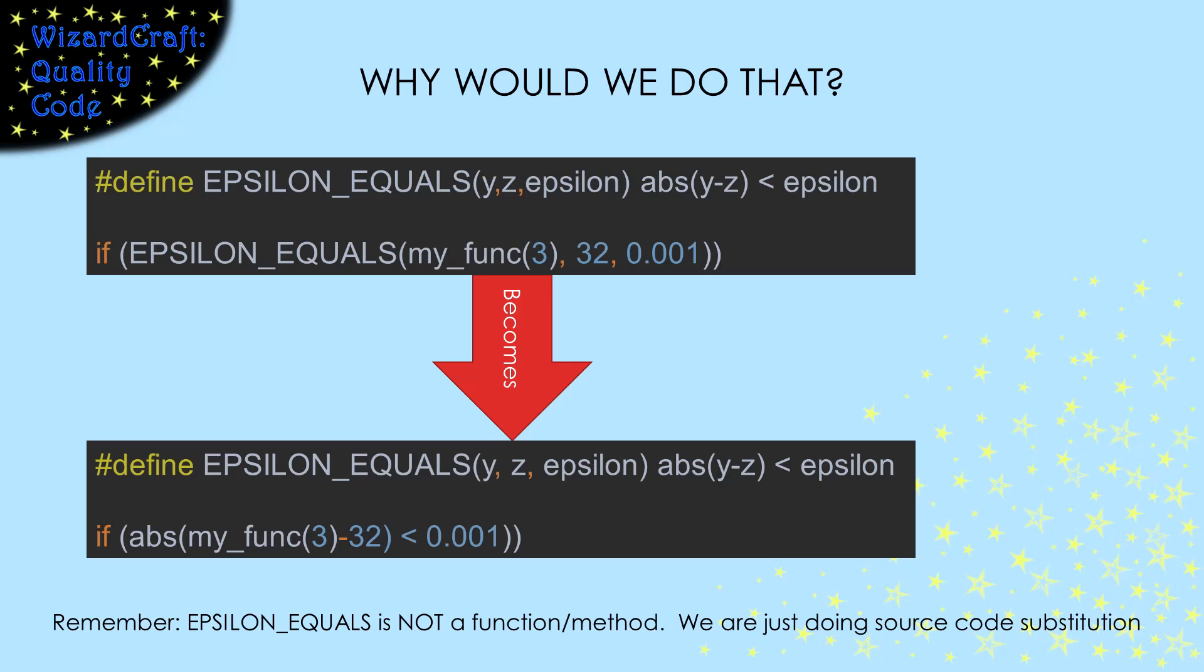For example, if we were comparing values of financial data, we might want to set epsilon to a tenth of a penny and say they're equal if they're within a tenth of a penny of each other. So here, I have defined epsilon equals to take three parameters, two values I want to compare, and an epsilon for how close they have to be in order to be considered equal. The replacement string calculates the absolute value of their difference and compares it to epsilon. It will evaluate to true if they're close enough.